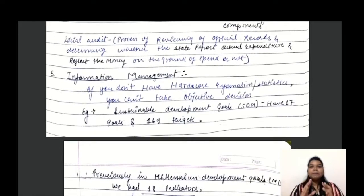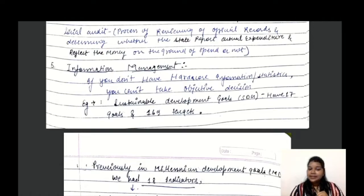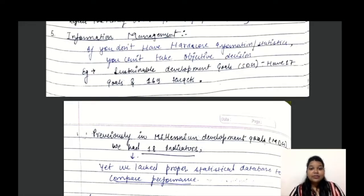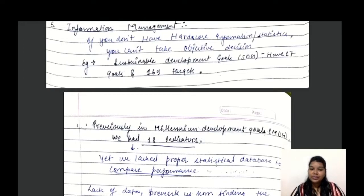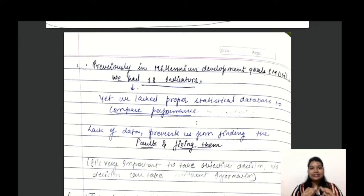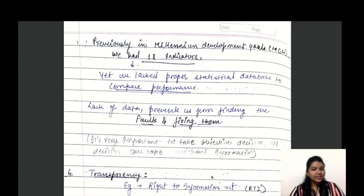The fifth factor is information management. Without hardcore information and statistics, you cannot take any objective decisions. For example, in the Millennium Development Goals we had 18 indicators, yet we lacked a proper statistical database to compare performance. Civil servants cannot take decisions objectively because of the lack of proper information management and statistical databases. Good information is essential for objective decision-making.